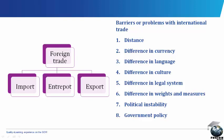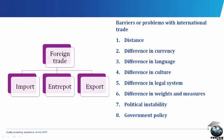Visible imports consist of goods that can be seen and touched. Nigeria's visible imports, for example, include automobiles, machinery, and rice. Invisible imports consist of services that cannot be seen or touched rendered by countries, and examples include aviation, tourism, and banking. These appear in the balance of payments.